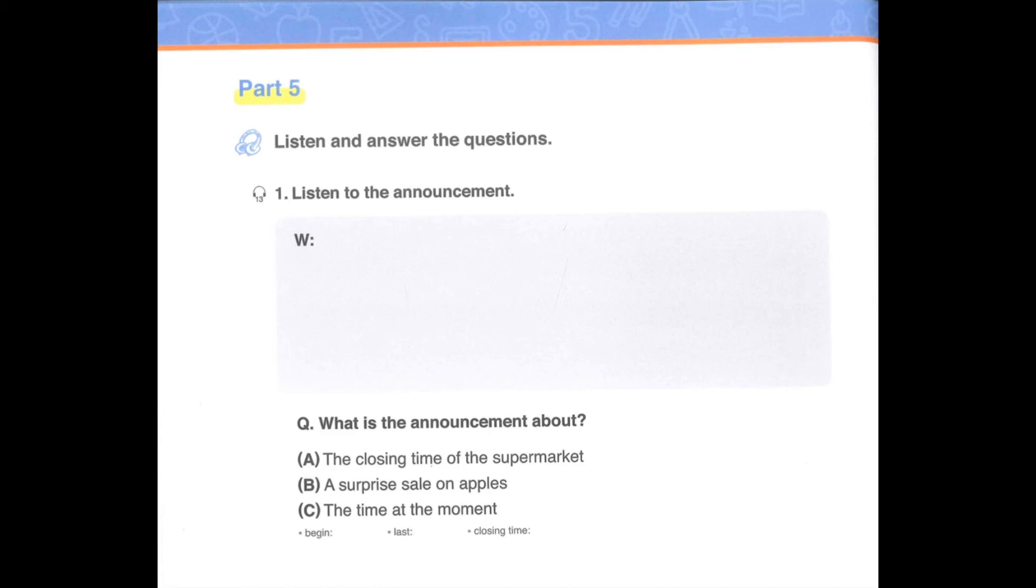Part 5: Listen and answer the questions. Number 1, listen to the announcement. Attention shoppers! We are going to have a surprise sale in the produce section. Apples will be sold for only $1 per bag. The sale begins now and it will last for only 20 minutes. Come and get your fresh apples now! What is the announcement about? A: The closing time of the supermarket. B: A surprise sale on apples. C: The time at the moment.